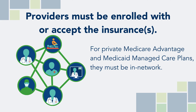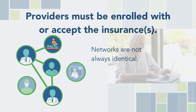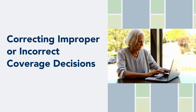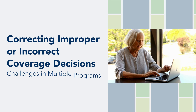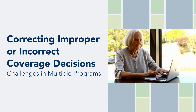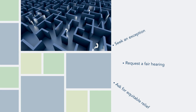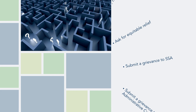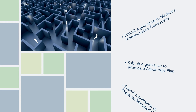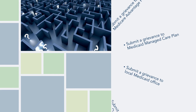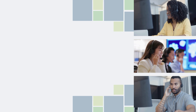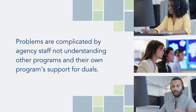Unfortunately, even when the same company offers both a Medicare Advantage plan and a Medicaid-managed care plan, or when the Medicare Advantage plan is marketed specifically to people with Medicaid, there is a significant likelihood that the networks are not identical. Both Medicare and Medicaid have procedures for correcting improper or incorrect coverage decisions. As we have just learned, these are distinct programs, and understanding how to resolve issues can be extremely difficult and technical. Depending on the problem, a dually eligible person may need to file an appeal, seek an exception, request a fair hearing, ask for equitable relief, or submit a grievance to the Social Security Administration, Medicare administrative contractors, their Medicare Advantage plan, their Medicaid-managed care plan, the local Medicaid office, their Part D plan, or another agency. Unraveling problems becomes even more complicated when the staff working in each program lack knowledge about the other programs or how their own program operates differently for dual eligible individuals.